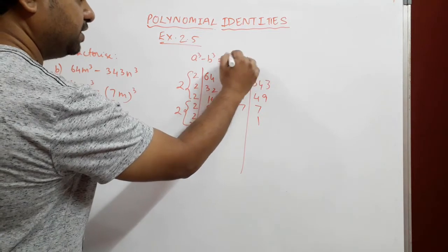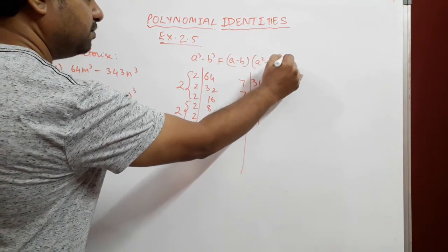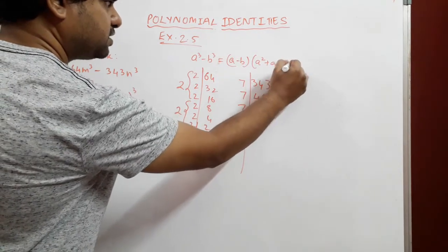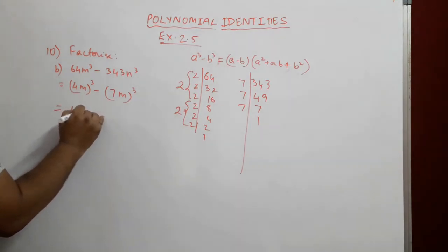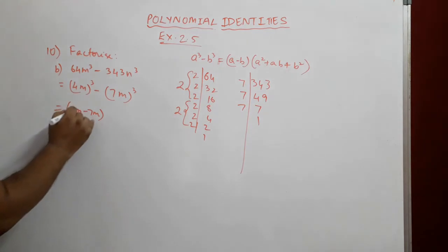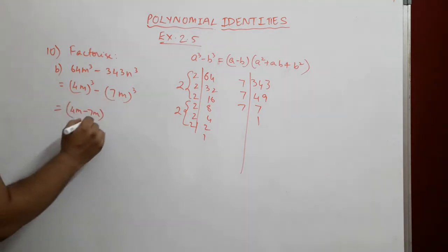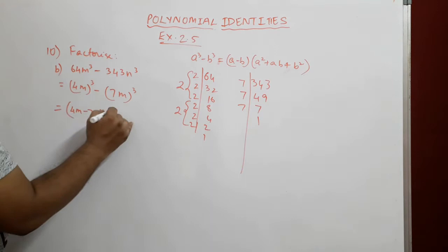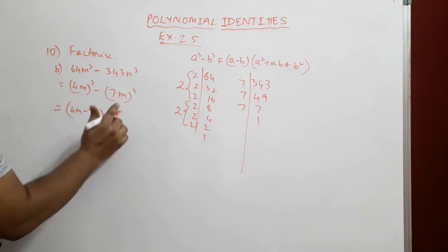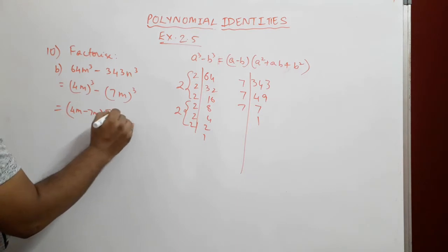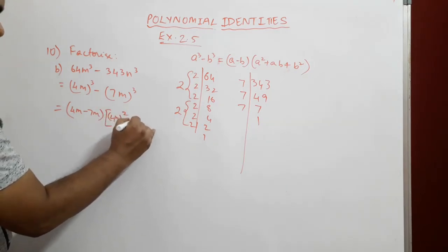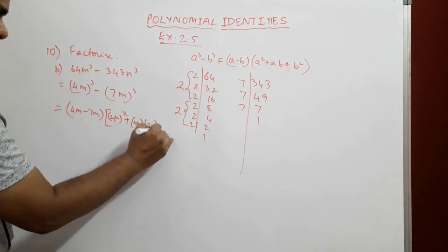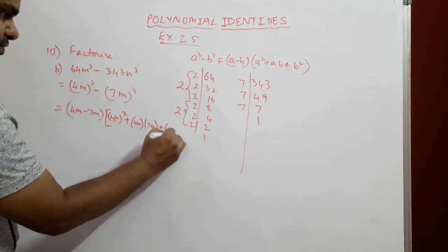We write (a - b)(a² + ab + b²), where a = 4m and b = 7n. So we get (4m - 7n)((4m)² + (4m)(7n) + (7n)²).